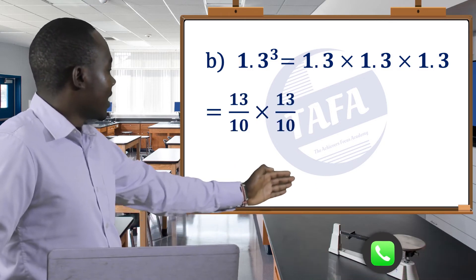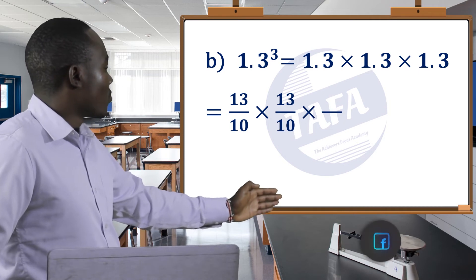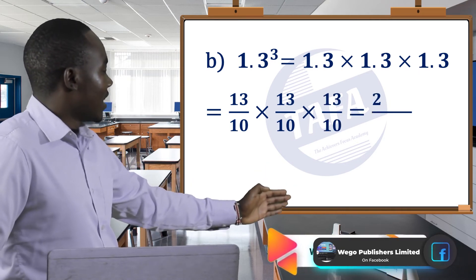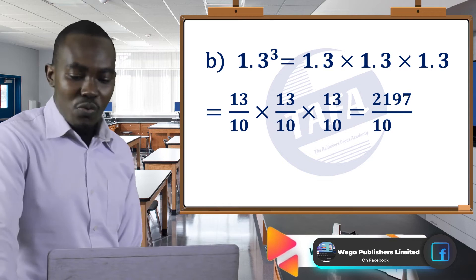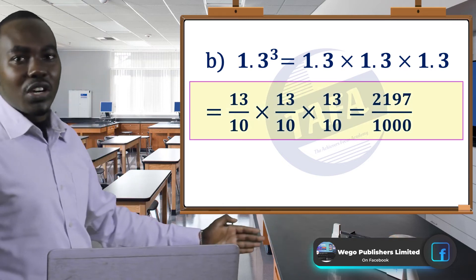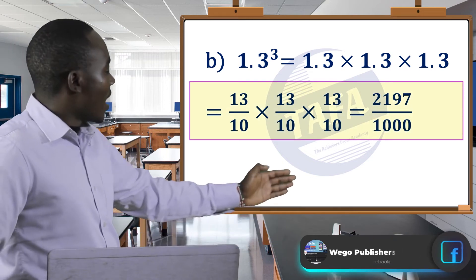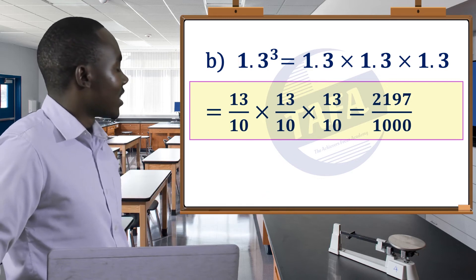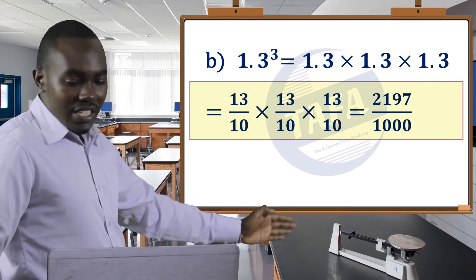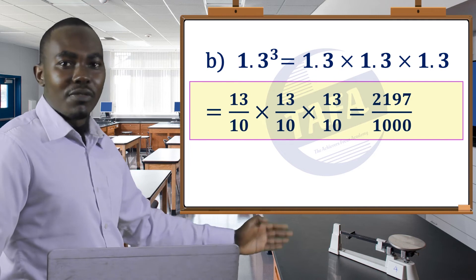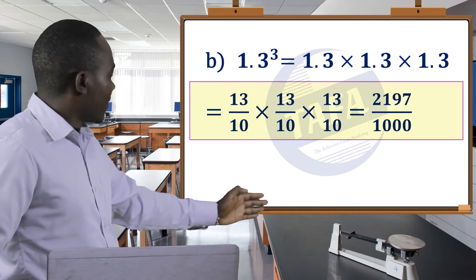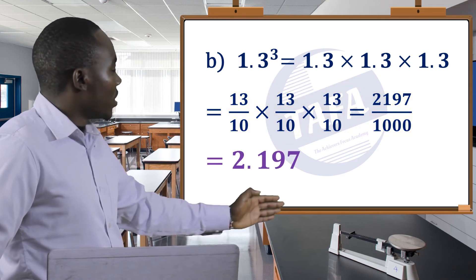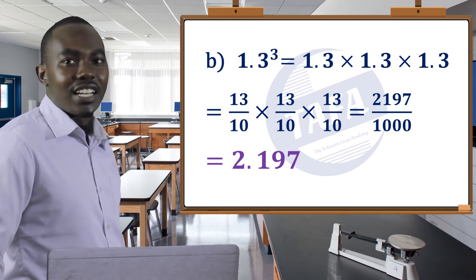13 over 10 multiplied by itself 3 times equals 13 over 10 times 13 over 10 times 13 over 10, which equals 2,197 over 1,000. And 2,197 over 1,000 is equal to 2.197 as a decimal.